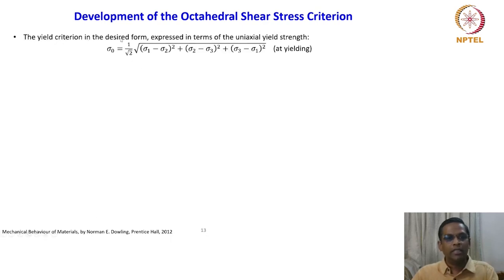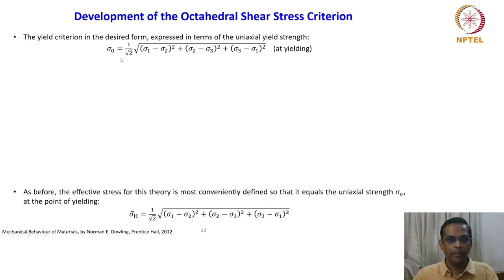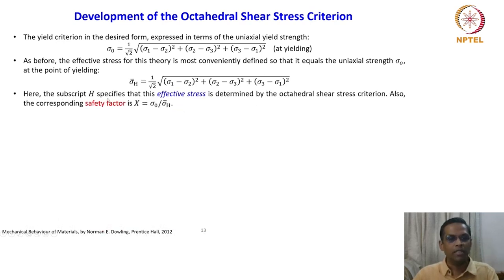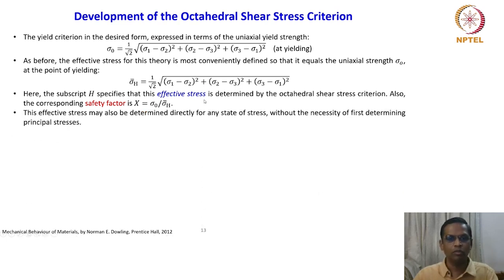This is for the octahedral stress criterion. The yield criterion expressed in terms of uniaxial yield strength is: σ₀ = (1/√2)√[(σ₁−σ₂)² + (σ₂−σ₃)² + (σ₃−σ₁)²] at yielding. We are interested in expressing this criterion in terms of yield strength. The effective stress σ̄ₕ is most conveniently defined so that it equals the uniaxial strength σ₀ at the point of yielding, and the safety factor is x = σ₀ / σ̄ₕ.